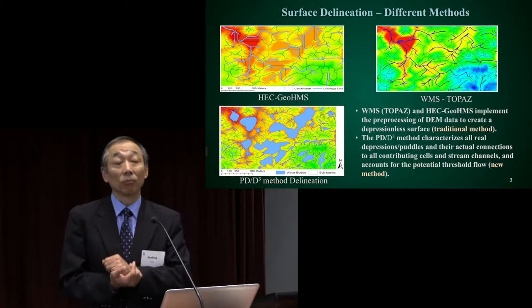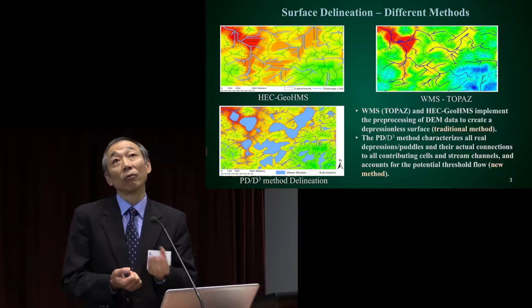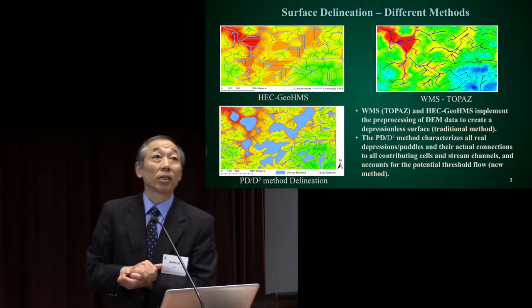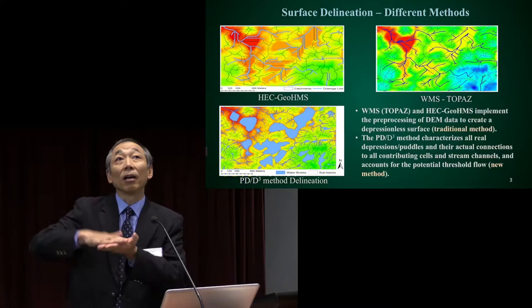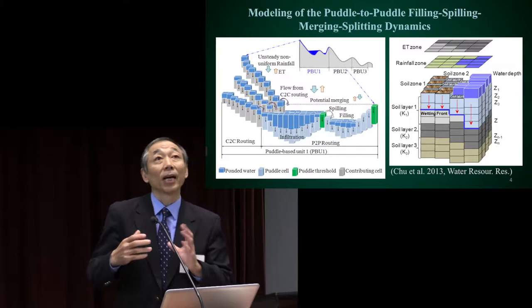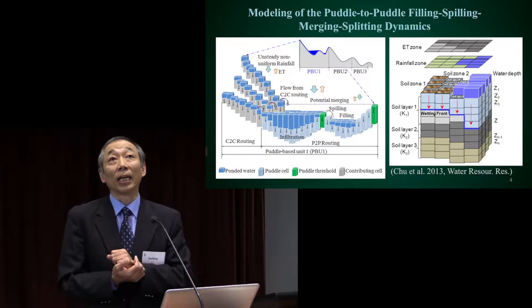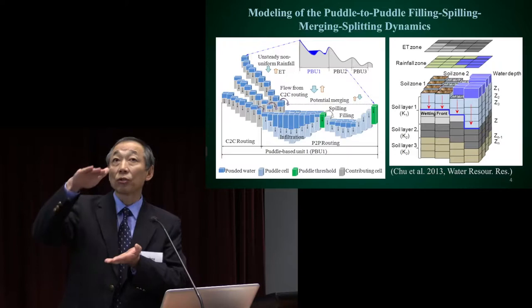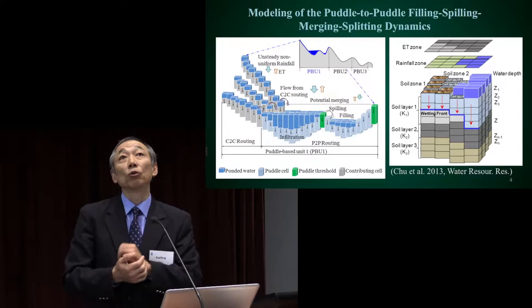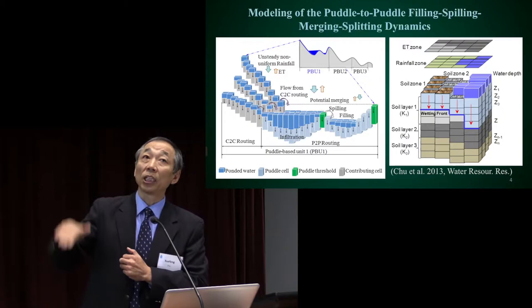Because of this, in recent years we worked on and developed a new method called the PD (Pothole Delineation) program. We later modified this into the D-cubed method. That means we will not fill depressions. You can see there are many depressions and potholes in the lower areas. We're going to keep them and also simulate their dynamics and hierarchical relationships. The basic idea is to handle delineation, identify all depressions, simulate their dynamics — we call it depression filling — and when reaching a threshold they will spill and merge if two depressions share one threshold.